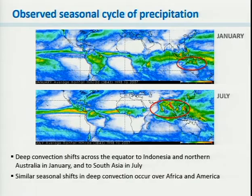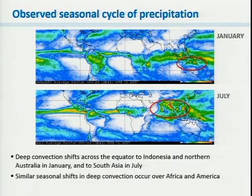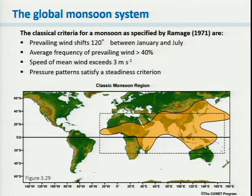When we look at seasonal precipitation, we also see regions with a very strong contrast between winter and summer. Northern Australia has a very wet climate in January but is extremely dry in the southern hemisphere winter, and the opposite is seen over South Asia. Africa and to some extent North and South America also have a very strong seasonal cycle in convection. All these components — the circulation and the rainfall — make up our understanding of the monsoon today.